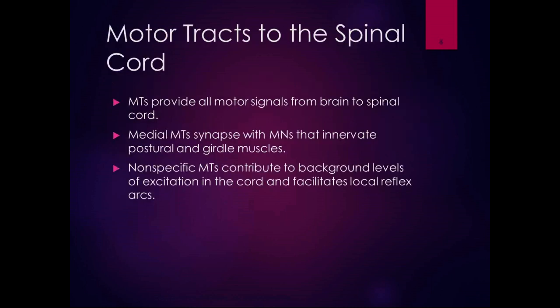To get from the brain to the spinal cord we use motor tracts — another one of our vertical tract systems. The motor tracts provide all the motor signals from the brain to the spinal cord. The medial motor tracts synapse with motor neurons that innervate postural and girdle muscles. Nonspecific motor tracts contribute to background levels of excitation in the cord and facilitate local reflex arcs. Lateral motor tracts contribute to fractionation and distal movements.